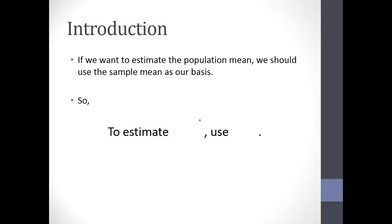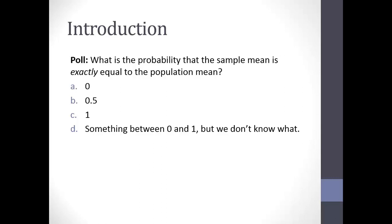To estimate the population mean mu, we're going to use the sample mean x-bar — that's just the intuition we've been using all along. Here's a question to think about: what is the probability that the sample mean is exactly equal to the population mean? Is that probability 0, 0.5, 1, or something between 0 and 1 that we don't know?